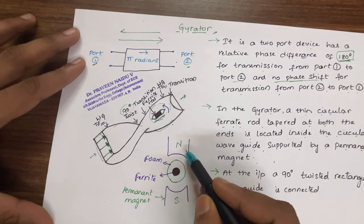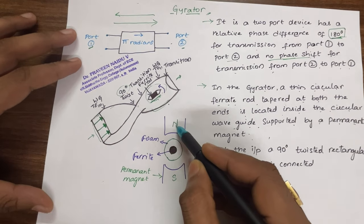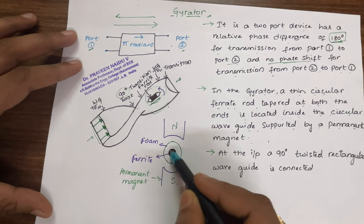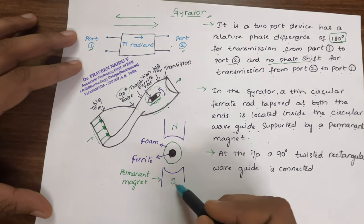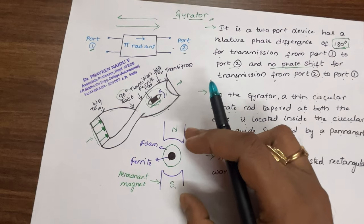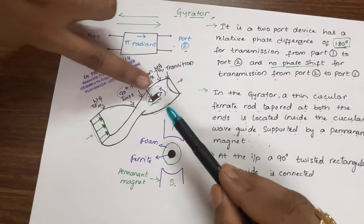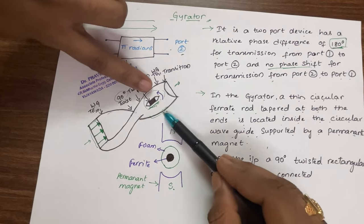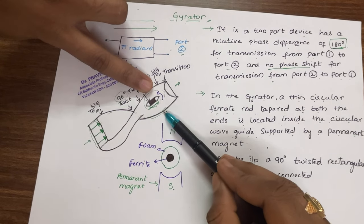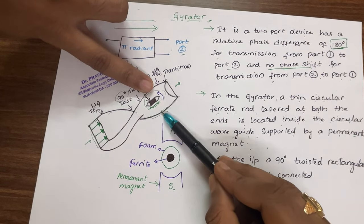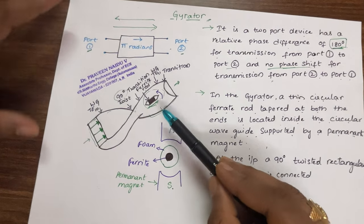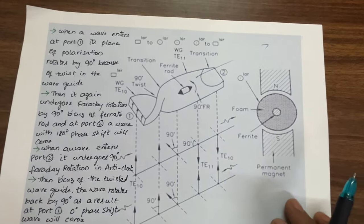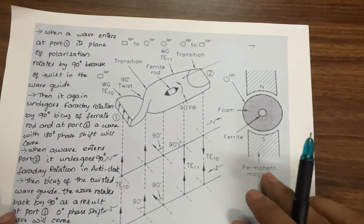Across the ferrite rod we put a permanent magnet. You can see the configuration here — this is our north pole, this is our south pole. These are permanent magnets and we are keeping the ferrite between these two permanent magnets, offering a permanent magnetic field to the ferrite. We can understand this in more detail from this figure.